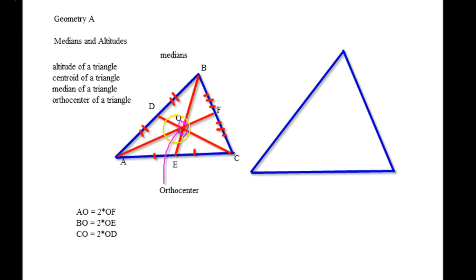So basically what that's saying is that this segment is twice as long as this. And then vice versa for BO and OE, and CO and OE. So all those relationships do exist. Now you can also reverse that and say, OF is equal to half of AO, OE is equal to half of BO, and OD is equal to half of CO.